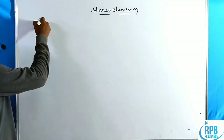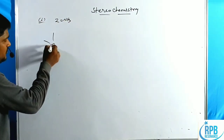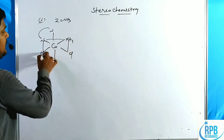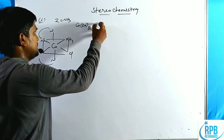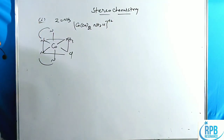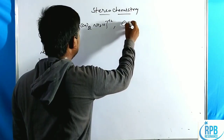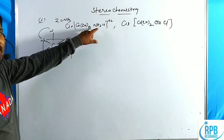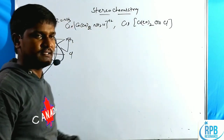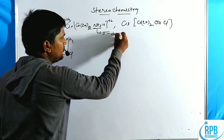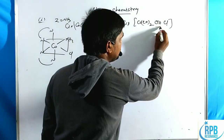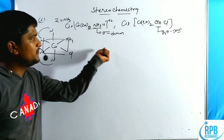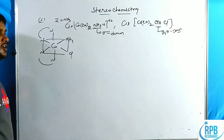Let us go through the first CIS isomers. Here Z is equal to NH3. The complex is cobalt(ethylenediamine)₂(NH3)Cl with a plus two charge. Another complex is cis-cobalt(ethylenediamine)₂(OH)Cl with plus one charge. I would like to take two ligands in place of Z: here Z equals NH3 and here Z equals OH. Ammonia is only a sigma donor ligand. OH is a sigma as well as pi donor ligand. Let us go through what happens in the stereochemical aspect for both sigma donor and sigma-plus-pi donor ligands.